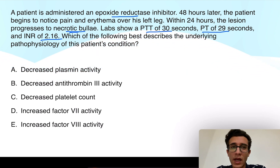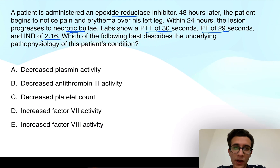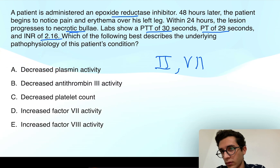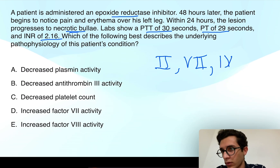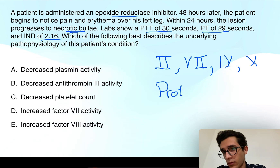Just a quick reminder: the function of epoxide reductase is to reduce vitamin K to its active form. When vitamin K is activated, it carboxylates or activates procoagulant factors and anticoagulant proteins — specifically, it activates procoagulant factors 2, 7, 9, and 10, and also activates the anticoagulant proteins C and S.